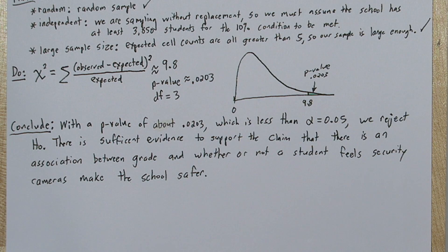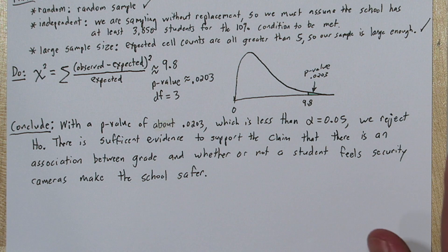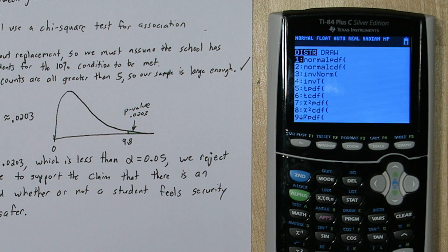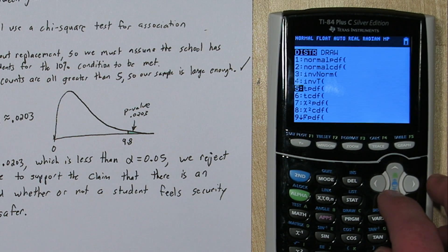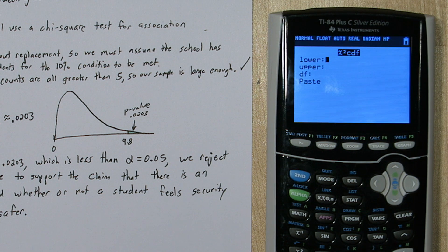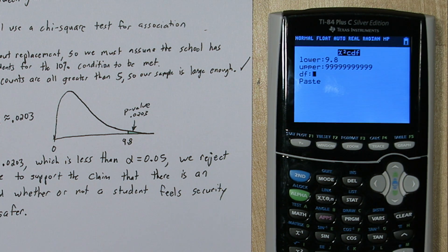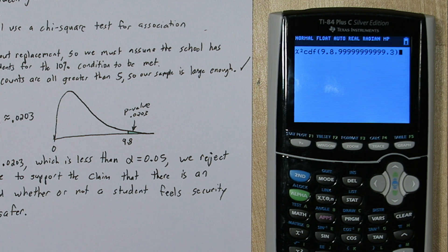One last thing — if you were calculating this by hand and had your chi-square test statistic and needed to find the p-value, press 2nd to get to the distribution menu and select chi-square CDF. For the lower limit, enter your test statistic; for the upper limit, a very large number; and for degrees of freedom, enter 3. Press paste and then enter again, and you get your p-value.